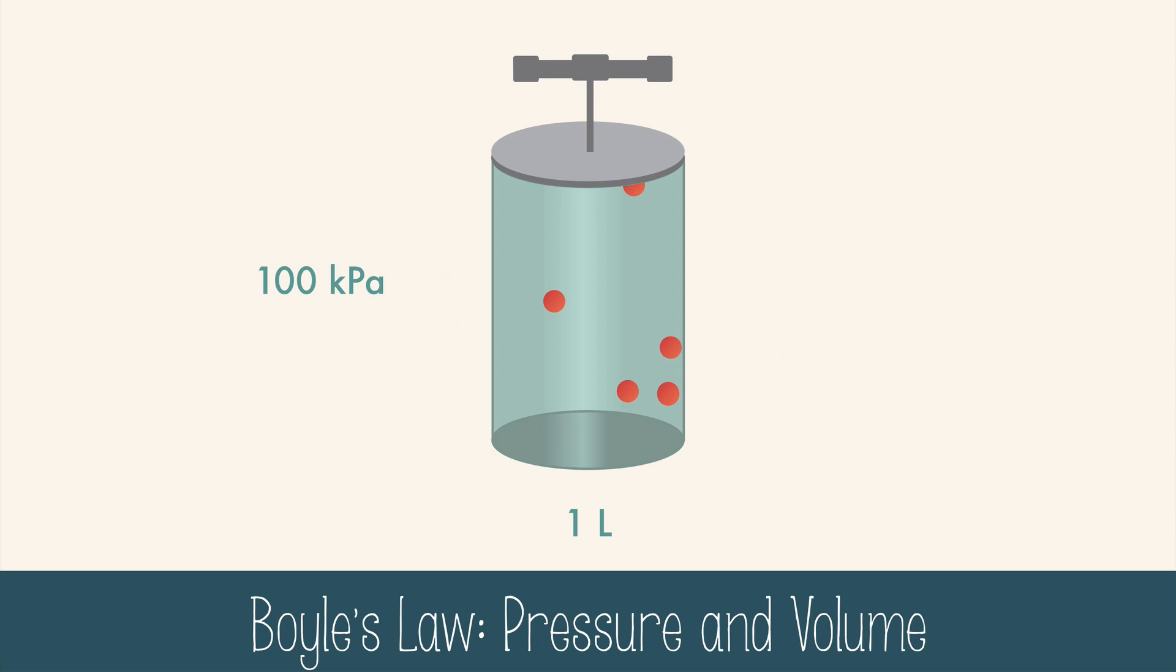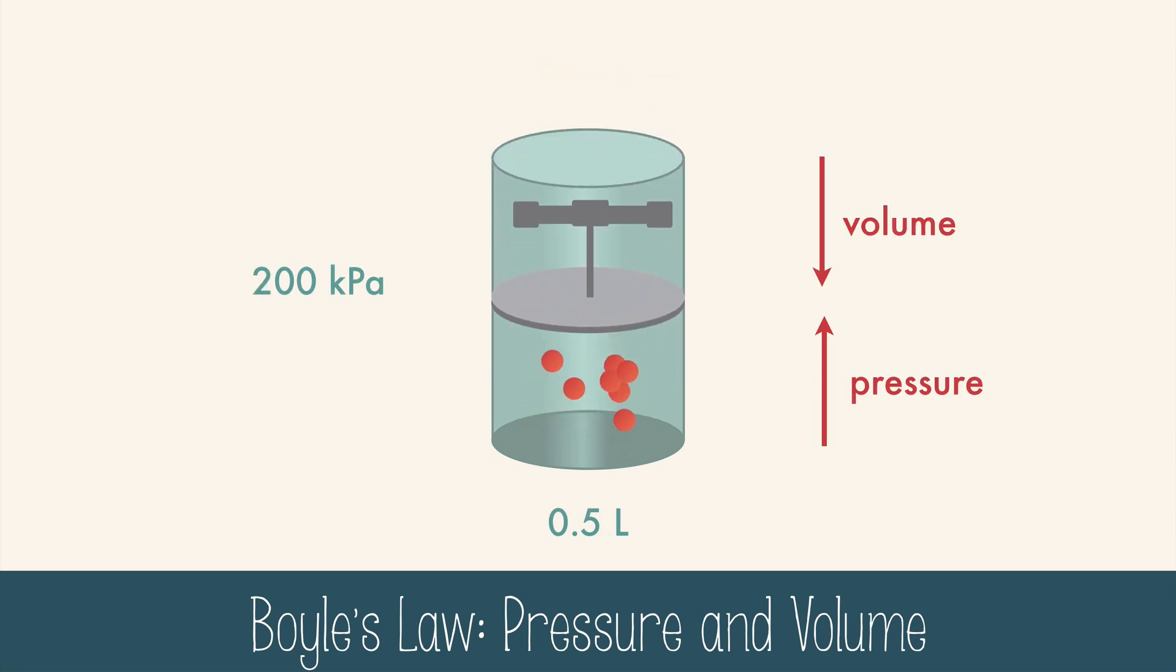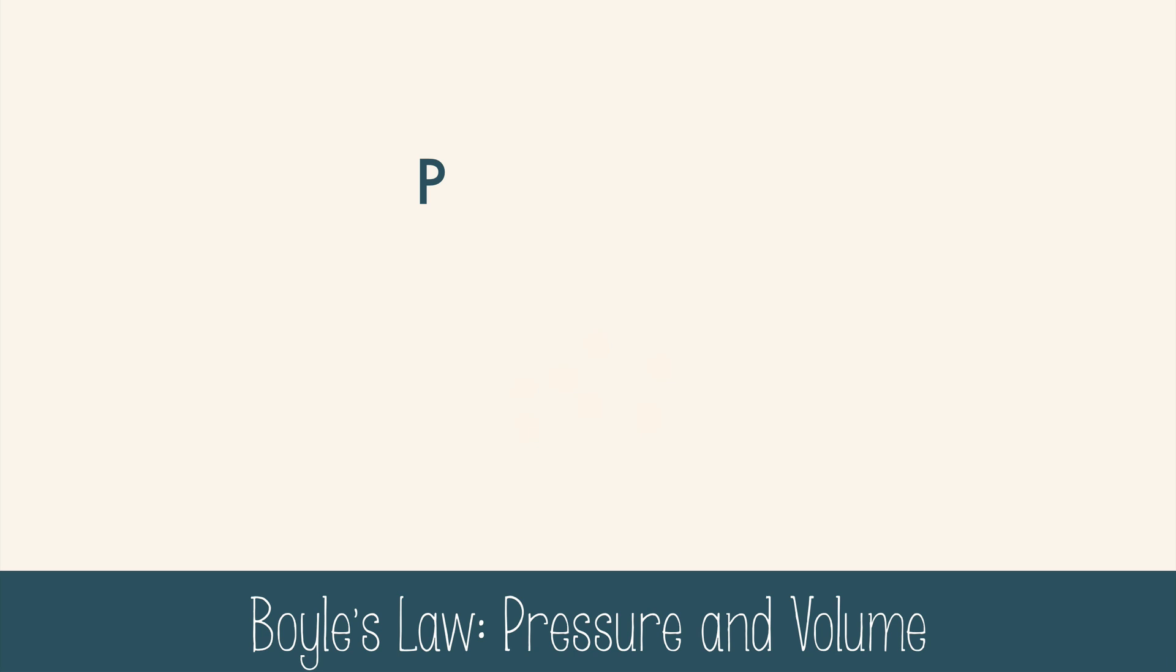First, we'll look at the relationship between pressure and volume. We'll hold moles and temperature constant by using a sealed container in a consistent temperature. When we decrease the volume, the pressure increases. This is an inverse relationship, which means the variables will be on the same side of the equation and the constant will be opposite. Here's the equation for pressure and volume: pressure times volume equals some constant.